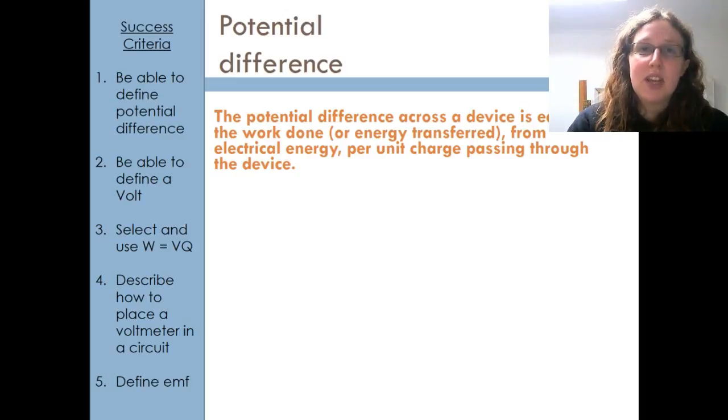So the important thing here is that we're talking about the amount of energy that's being transferred per charge from electrical energy. You'll have potential differences across the devices in circuits, things like your lamps and your LEDs and your resistors. They will have potential differences across them.